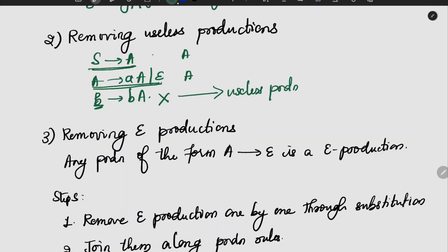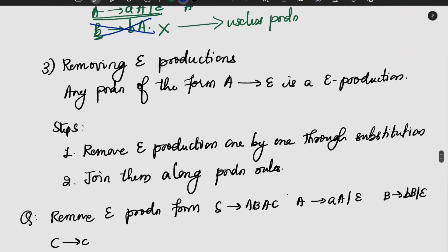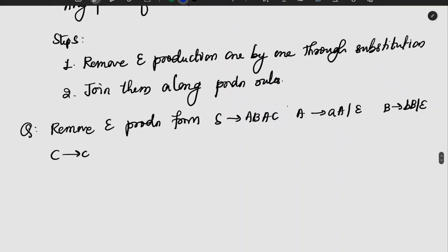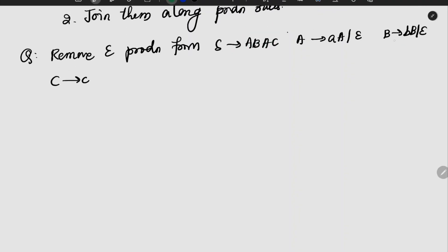We usually eliminate useless productions. The next type is epsilon productions — that is, productions of the form A gives epsilon.